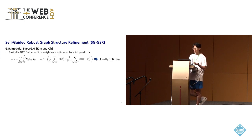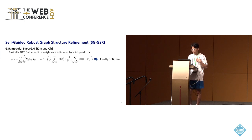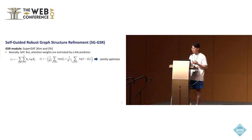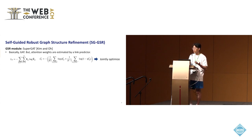We named our approach Self-Guided Robust Graph Structure Refinement, SG-GSR. To implement SG-GSR, for the GSR module, we use the SuperGAT model as the backbone. Specifically, SuperGAT is basically GAT, but differs in that the attention weights are estimated by a link predictor. We train the SuperGAT model by jointly optimizing the node classification loss and link prediction loss.